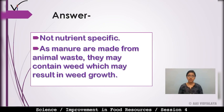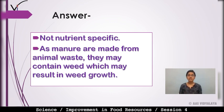First, manures are not nutrient specific. As manure is made from animal waste, it may contain weed seeds which may result in weed growth — those unwanted plants that disturb crop growth. Second, manures may also contain a high level of salts which may damage the roots of the plant.